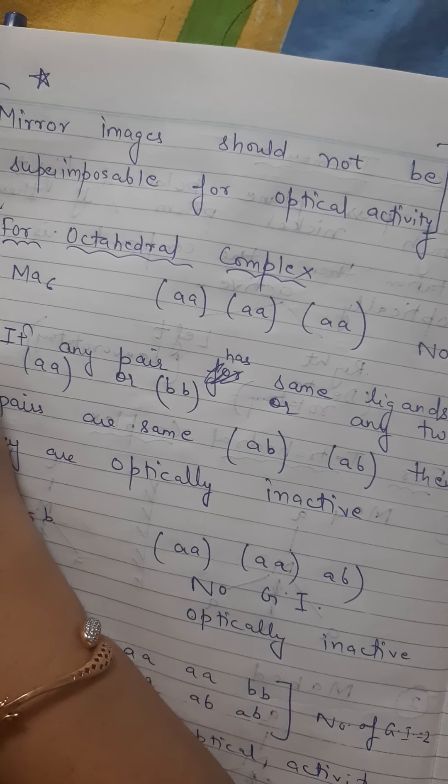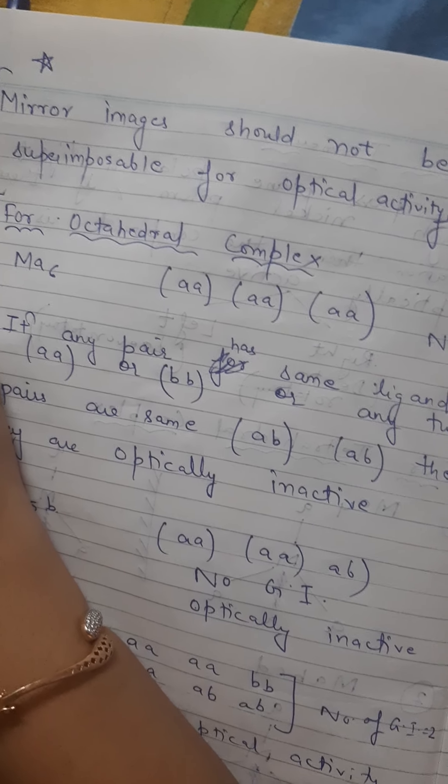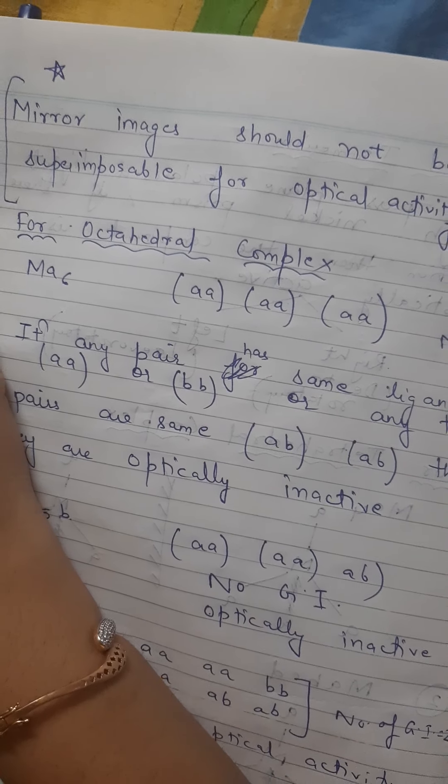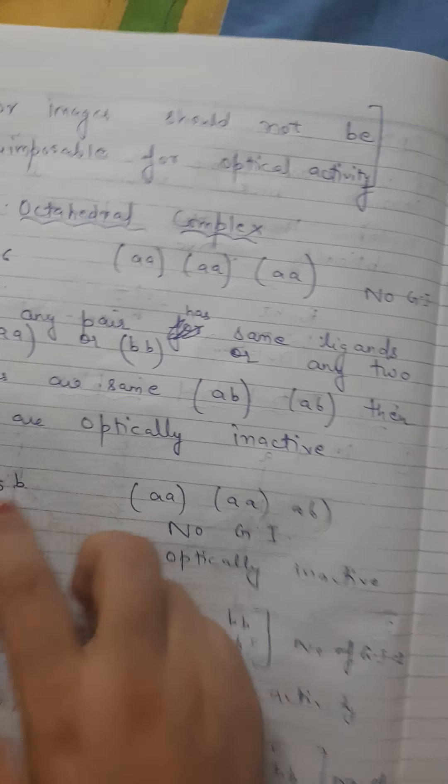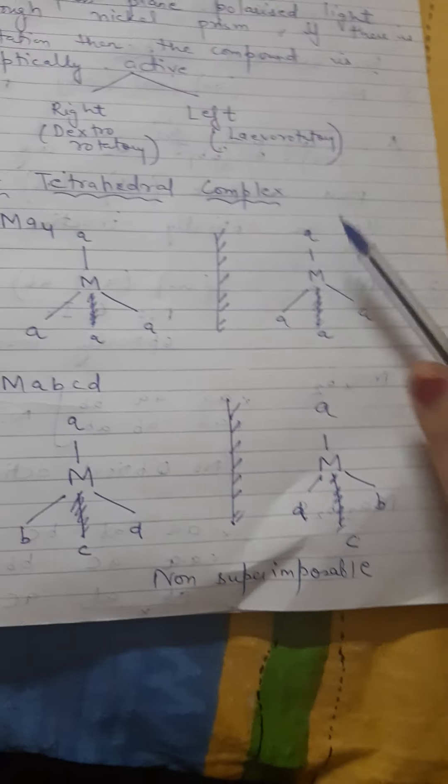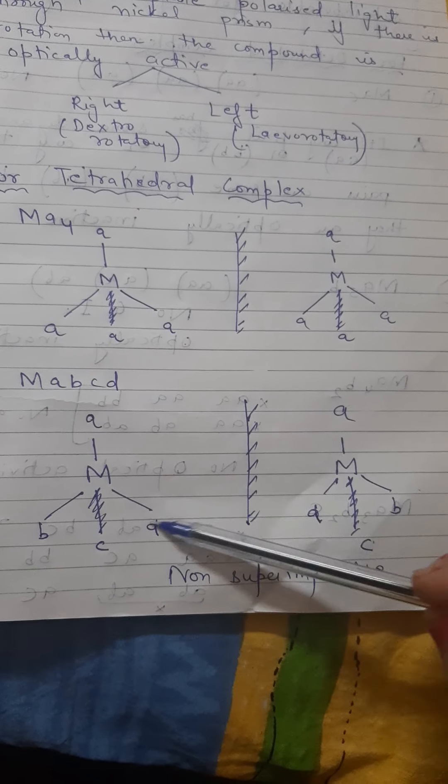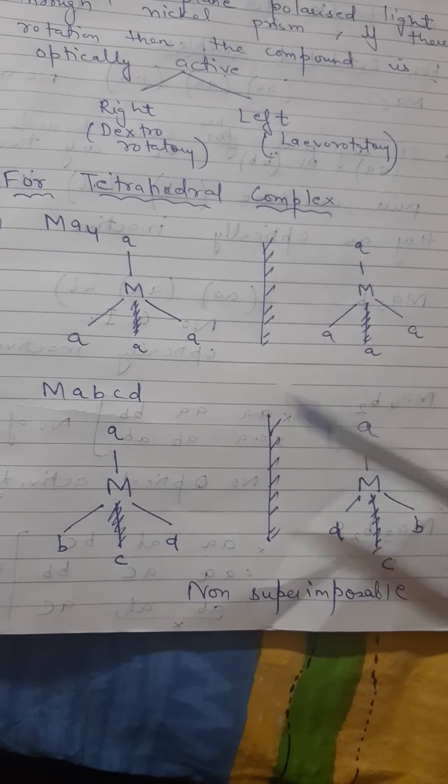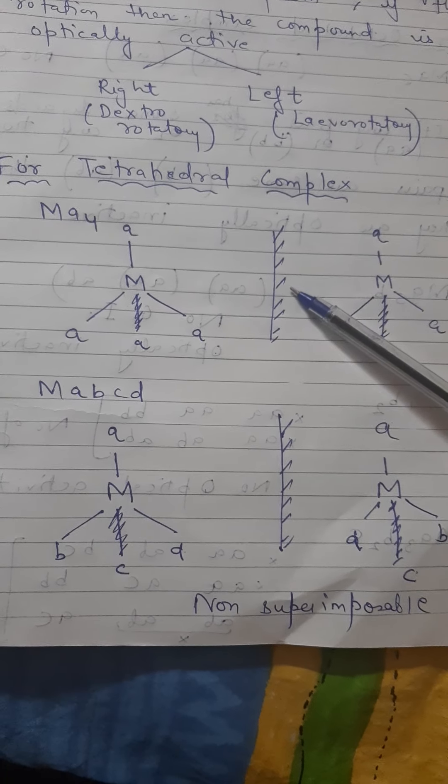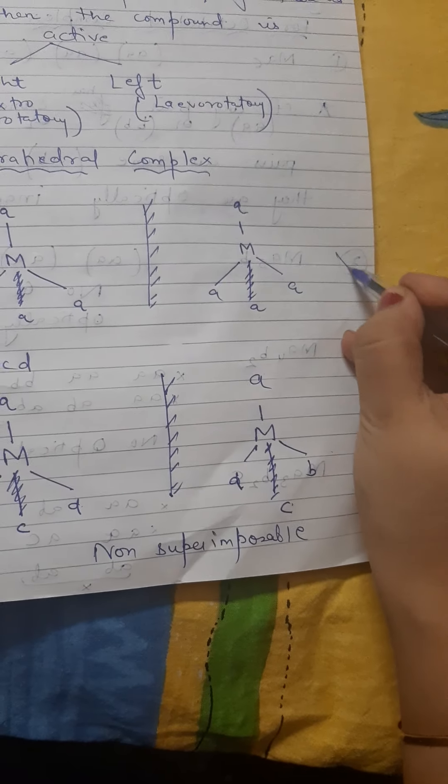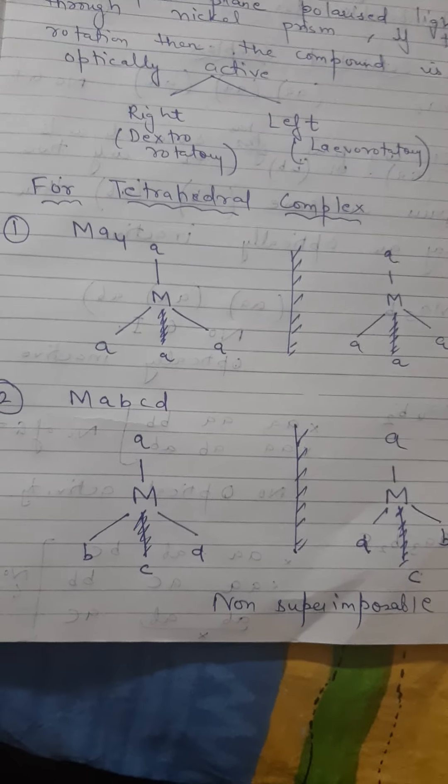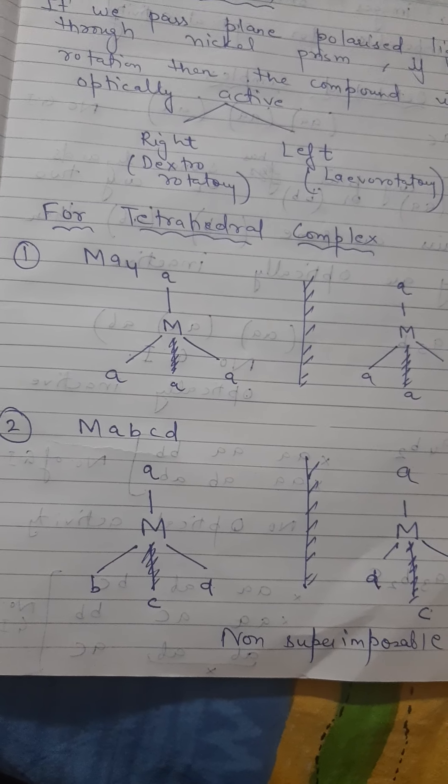You don't need to catch one another. You can see that here the mirror image will not be superimposed. So optical activity will not be observed here. But in this case, optical activity will be observed. This is for tetrahedral complex.